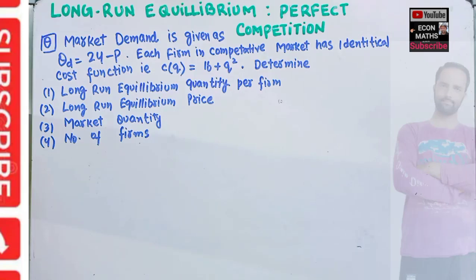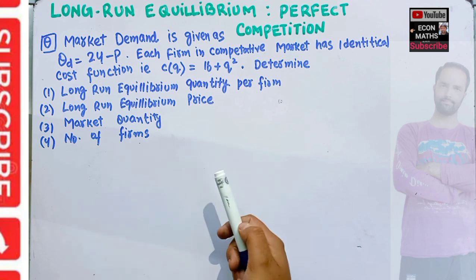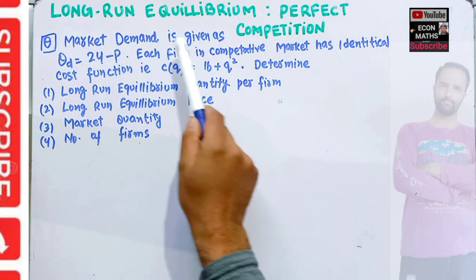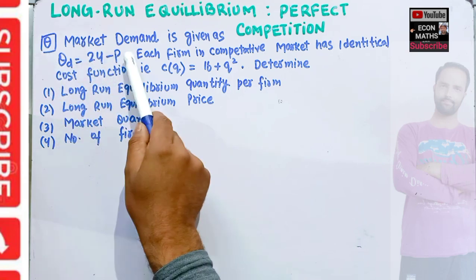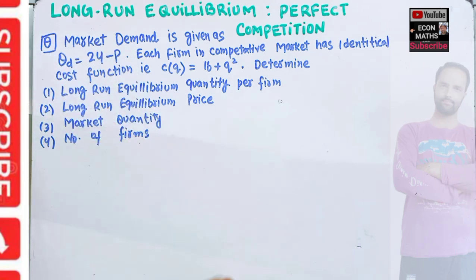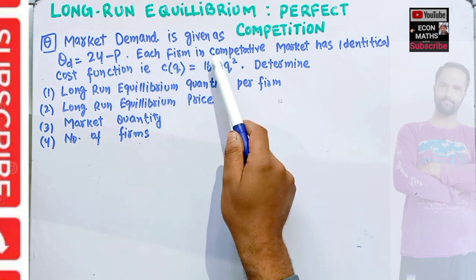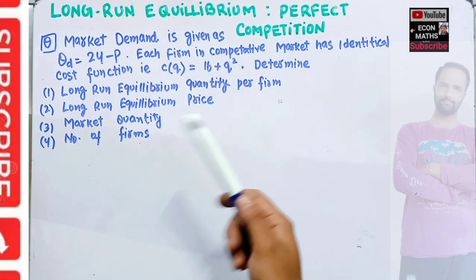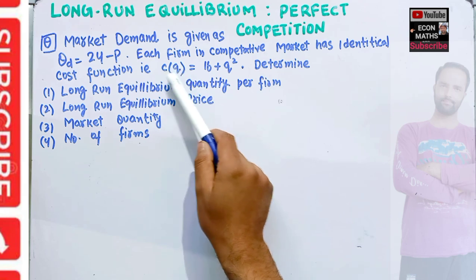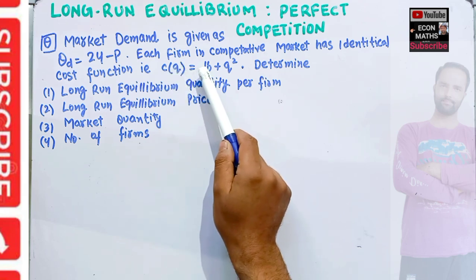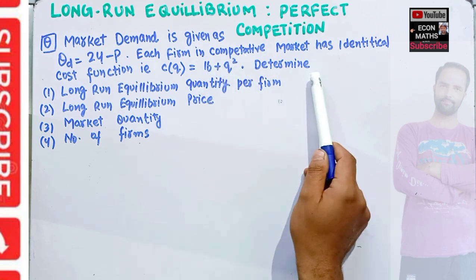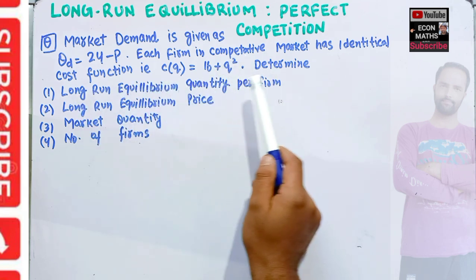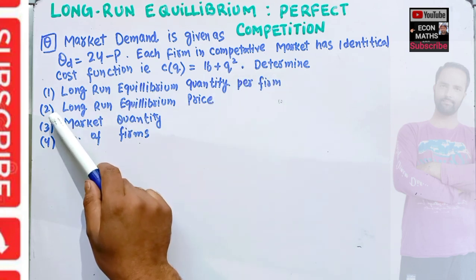In this video we will learn how to find the long-run equilibrium price, equilibrium quantity, and the number of farmers in the long run, and how to get the market quantity using a numerical problem. Market demand is given as QD = 24 minus P, where P is the price and Q denotes market output. Each firm in the competitive market has an identical cost function C(Q) equal to 16 plus Q squared.